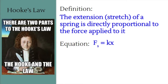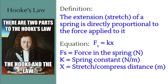Hooke's Law equation is fs equals k times x. fs is the force in the spring, measured in newtons. k stands for the spring constant, with units of newtons per meter. x stands for the stretch or compress distance — how far we're stretching or compressing the spring, and that distance is x in both cases.